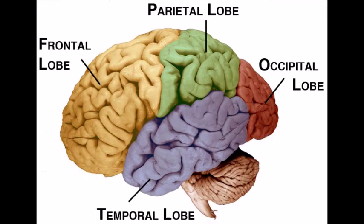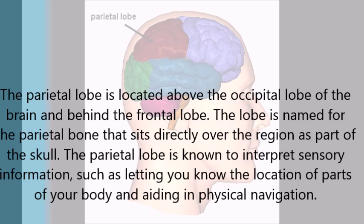The parietal lobe is located above the occipital lobe of the brain and behind the frontal lobe. The lobe is named for the parietal bone that's directly over the region as part of the skull.